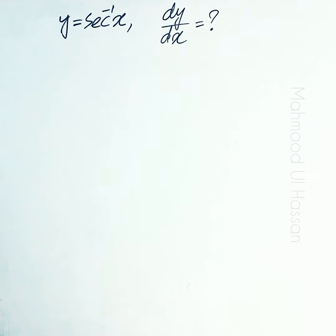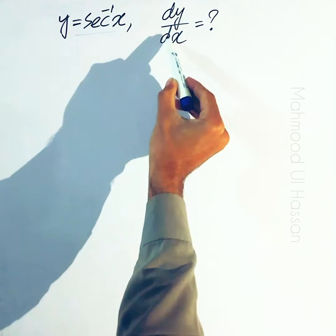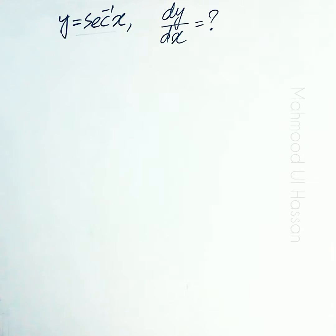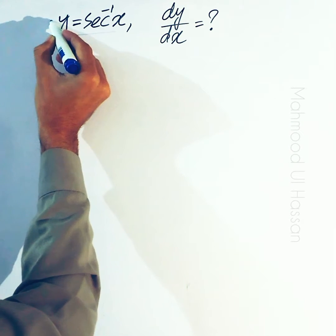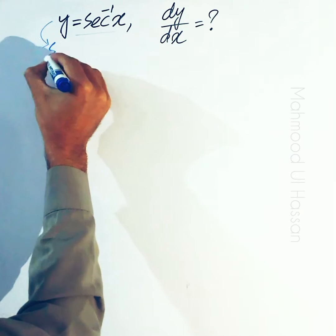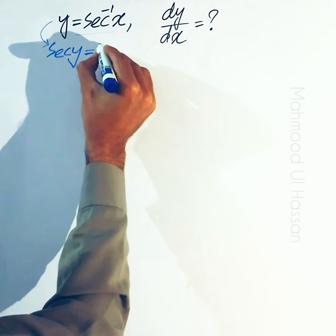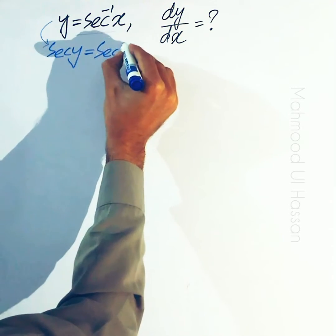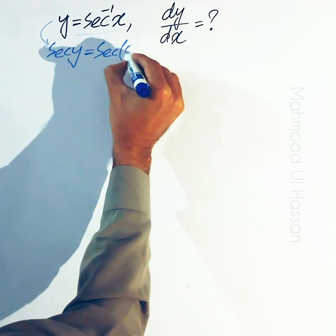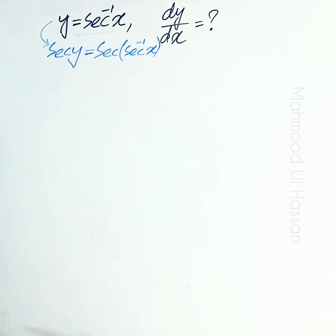y is equal to secant inverse of x and we are going to find the derivative of secant inverse of x. So, applying secant to both sides, we have secant y is equal to secant of secant inverse of x.